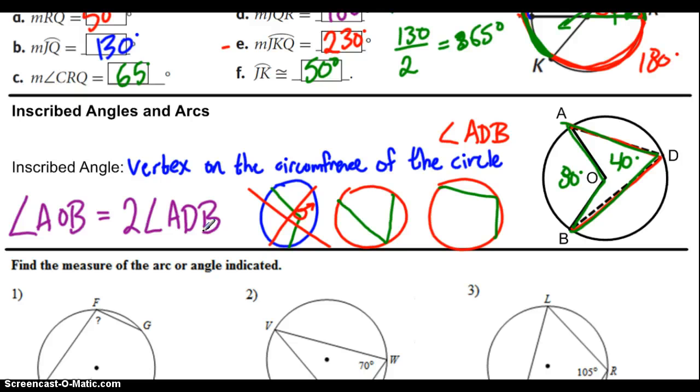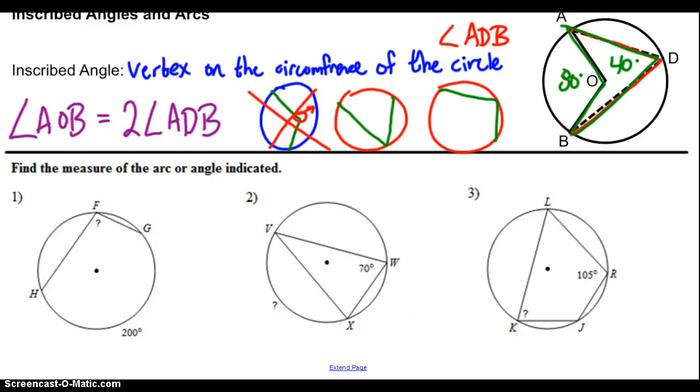Go ahead and try the next three problems, 1, 2 and 3. Pause the video here, and then unpause it when you're ready to take a look at the solutions. All right, let's take a look. For number 1, it gives us that this arc right here is 200 degrees. Now, we said that an inscribed angle, like this one right here, would be half of whatever that is. So that is 100 degrees. Let's take a look at the next one. We've got an inscribed angle here that is 70 degrees, which means that this arc is going to be double that, or 140 degrees.